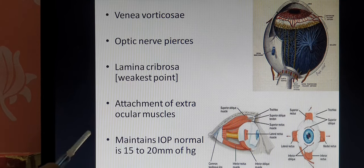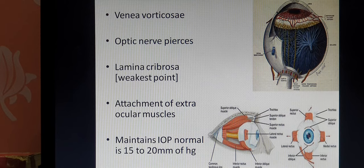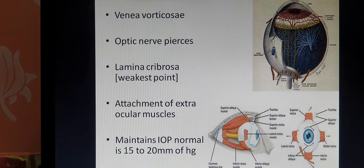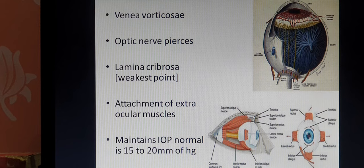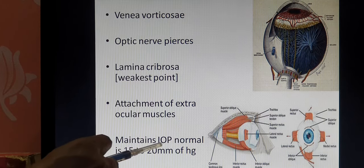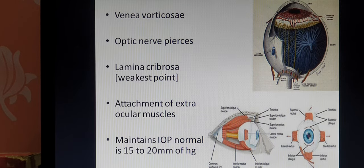The sclera also helps for the attachment of the extraocular muscles. Extraocular muscles control the movement of the eyeball — their contraction and relaxation causes the eyeball to roll in the orbit. Inside the eyeball there is fluid; changes in fluid quantity alter the pressure inside the eye. That pressure is called intraocular pressure, which is normally 15 to 20 mmHg. Intraocular pressure is measured by an instrument known as a tonometer. If the intraocular pressure exceeds 15 to 20 mmHg, that condition is called glaucoma.